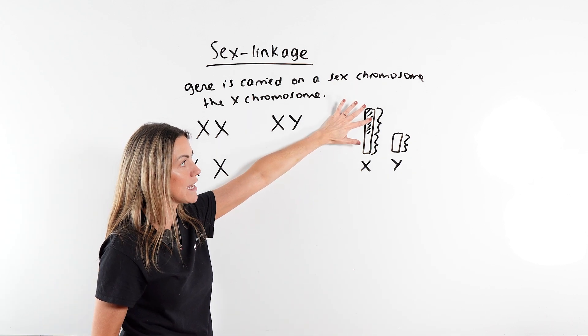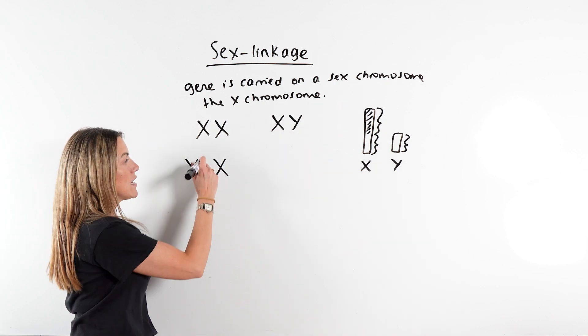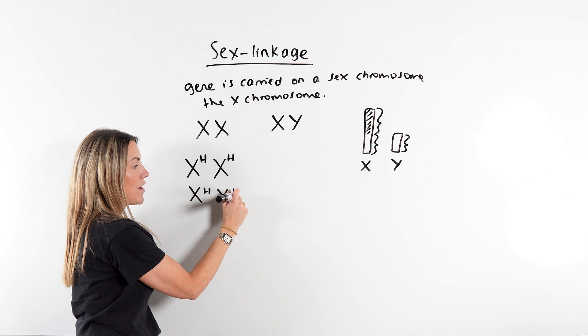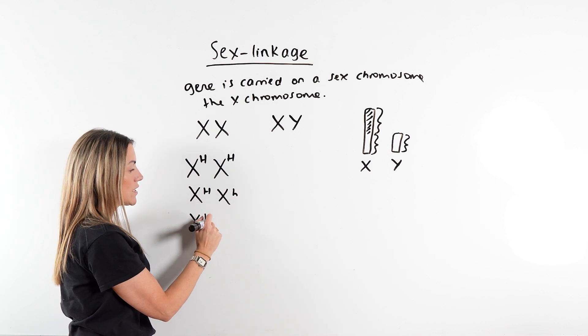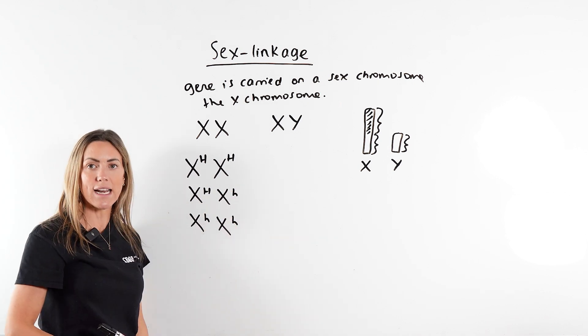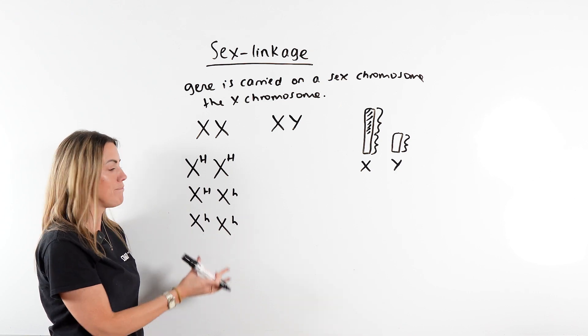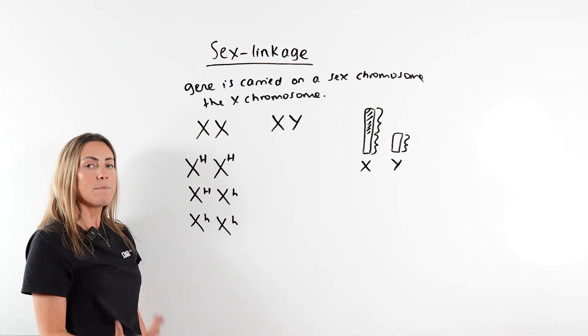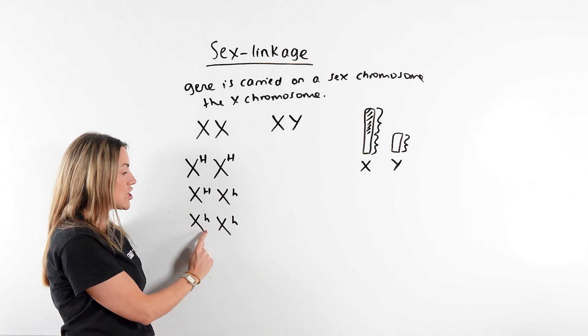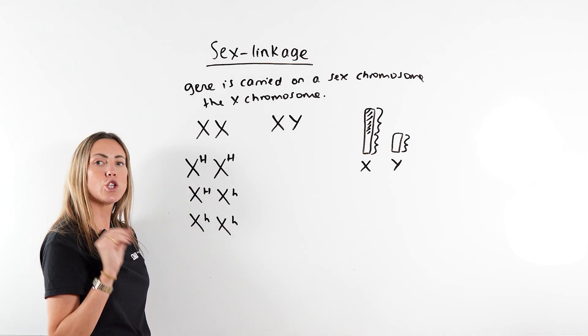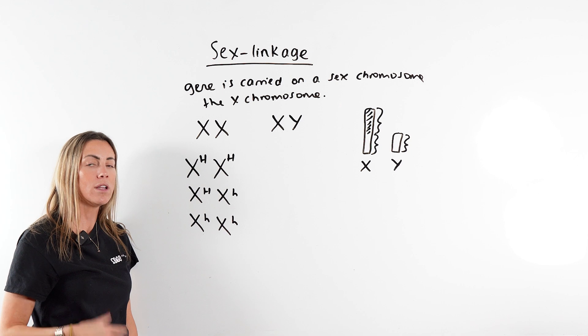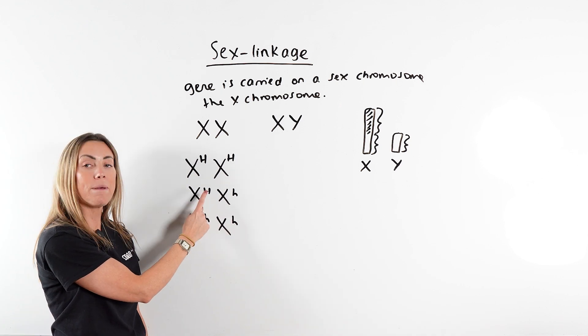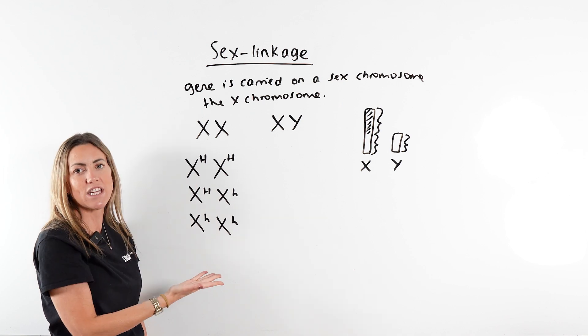So the haemophilia gene is on here, they'll have two copies. So they could have two dominant alleles, they could have a dominant and a recessive allele, they could have two recessive alleles. And this female would have haemophilia because haemophilia is caused by a recessive allele. Because she's female, she has two X chromosomes, she would need to inherit two copies of that recessive allele to have haemophilia. Here she would be a carrier of haemophilia, but would be unaffected herself because she has a dominant allele.